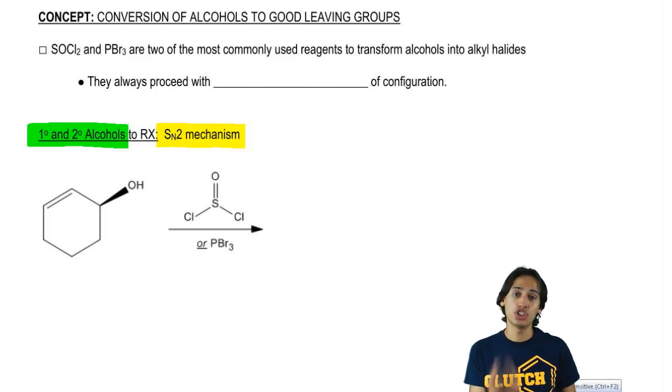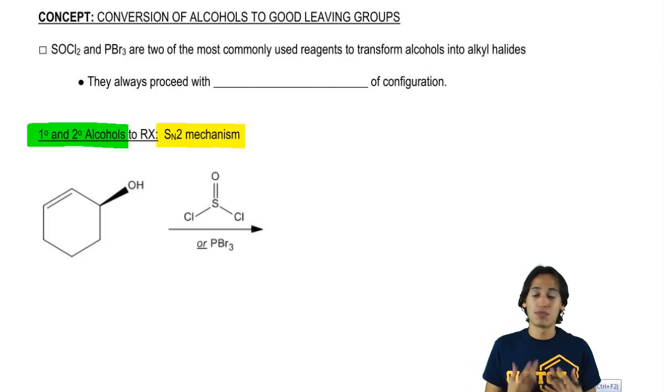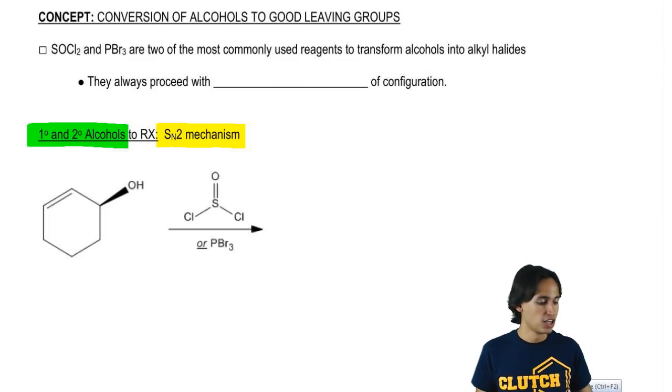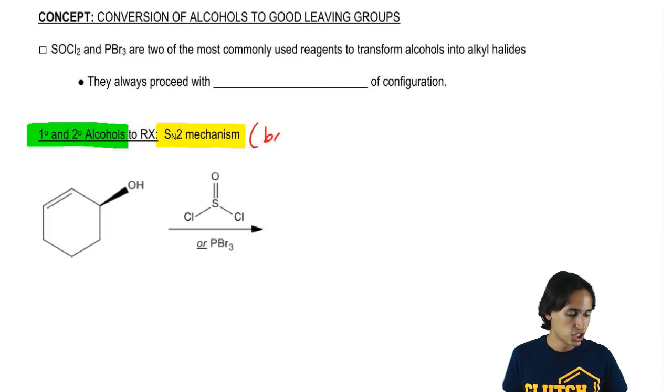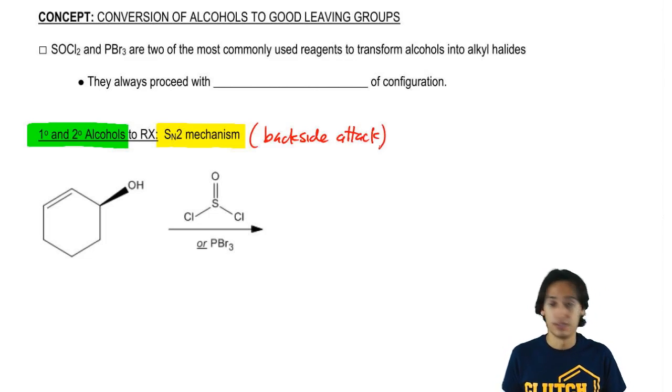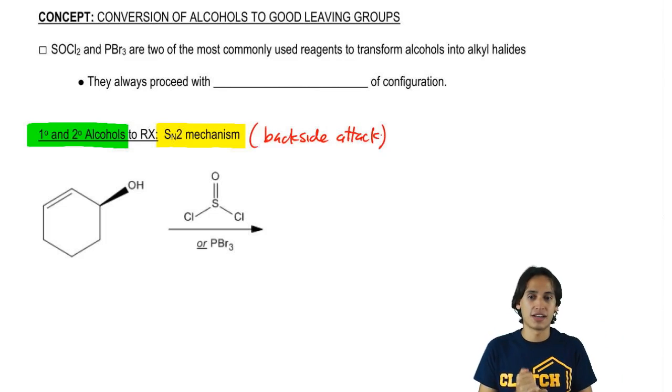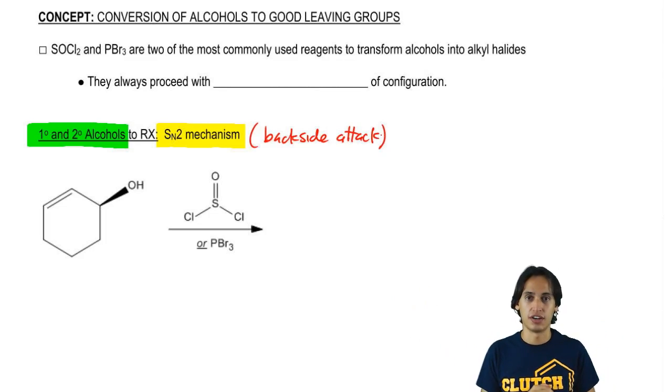So if I have a tertiary alcohol, I cannot use SOCl2 or PBr3 because I'm not going to get a backside attack. Remember that SN2 just means backside attack. And remember that tertiaries suck at it because tertiaries don't have a good backside. So I need it to be either primary or secondary.